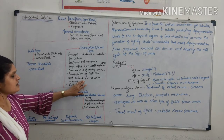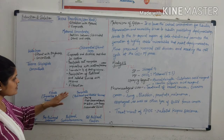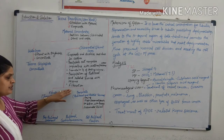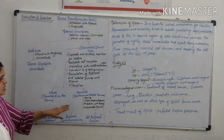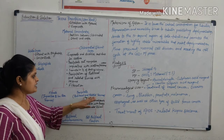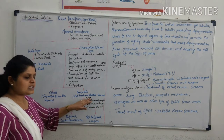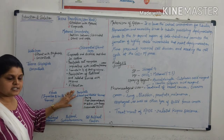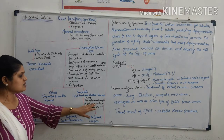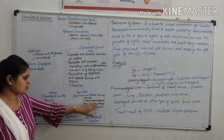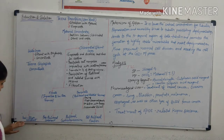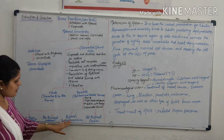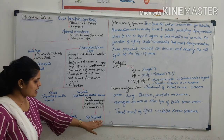Paclitaxel and related taxanes are precipitated. Then it is filtered. The filtered content contains impurities and low polar taxanes. Paclitaxel and related taxanes are present in the precipitate. The precipitate is dried and undergoes flash chromatography on silica gel with an acetone-chlorinated solvent system. Four fractions are collected: the first fraction contains low polar components, the second fraction contains free paclitaxel, the third contains cephalomanine, and the fourth contains post-paclitaxel fractions.